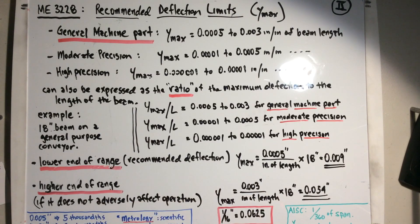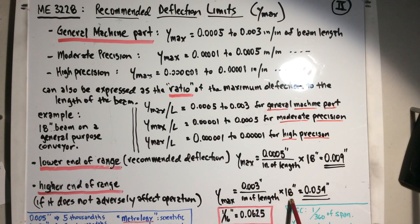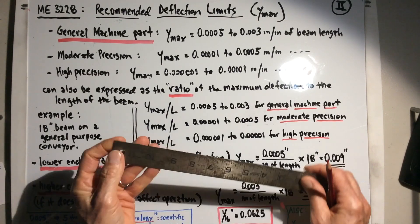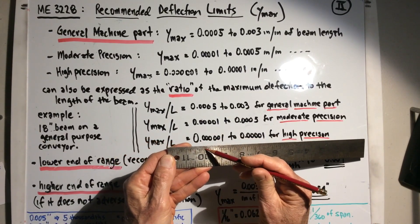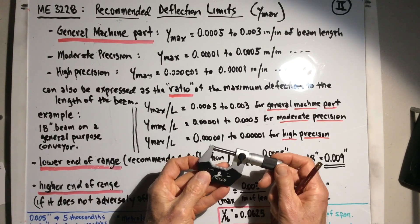So nine thousandths of an inch on a feeler gauge — not very much. That's the lower end of the range. If the deflection doesn't adversely affect the operation, you could use the higher end of the range: three thousandths of an inch per inch of length. For an 18-inch beam, that's three thousandths times eighteen, which is fifty-four thousandths of an inch — very close to one-sixteenth of an inch, which is 0.0625. You can measure one-sixteenth on a regular scale, but there's no way you could measure nine thousandths on a scale.